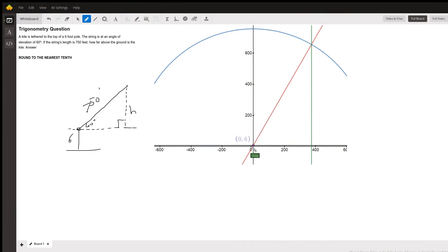Okay, here's a graph depicting what is going on. We've got this kite tethered to the top of a six foot pole and the angle of elevation of the kite is 60 degrees and the length of the string is 750 feet. We want to find out the distance from this point where the kite is to this point, how high is the kite above the ground.